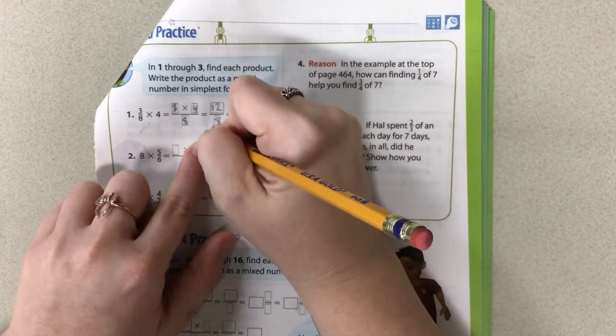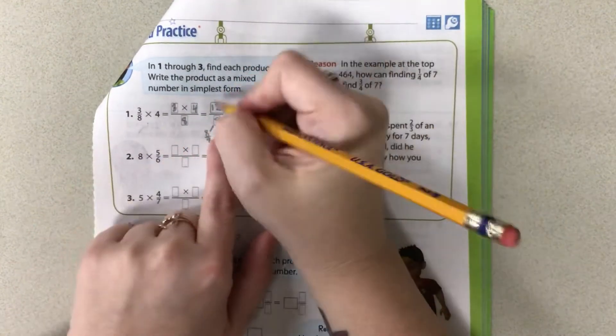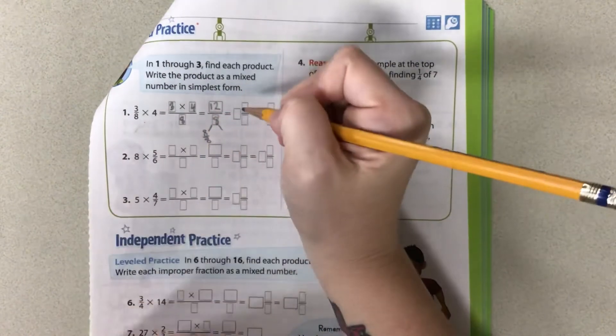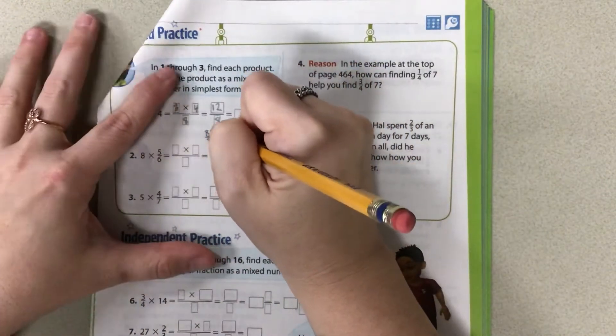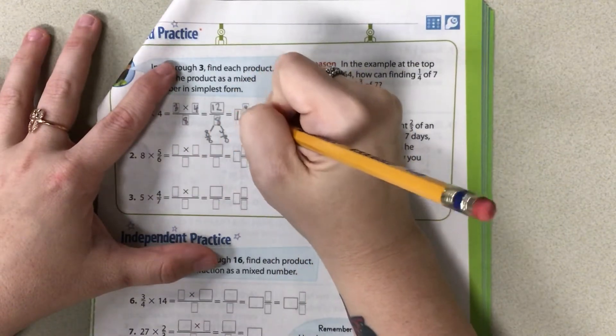I can pull out a group of 8 eighths. I can't do another one because that would be 16. So I have 8, 9, 10, 11, 12, 4 eighths left. So that's 1 whole and 4 eighths.